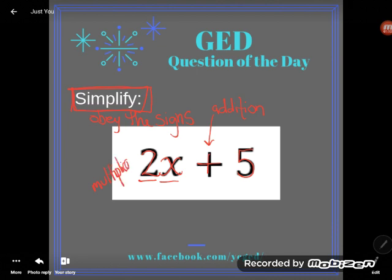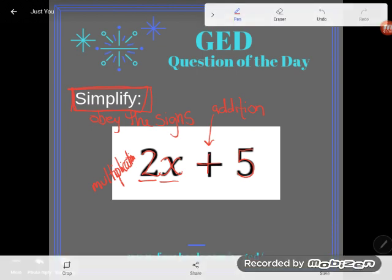So those are the only two operations that we have going on. Those are the only two things I could possibly simplify here. Let's take a look at these two operations. Order of operations says I should deal with multiplication first, so let's go ahead and look at that. What is 2 times x?